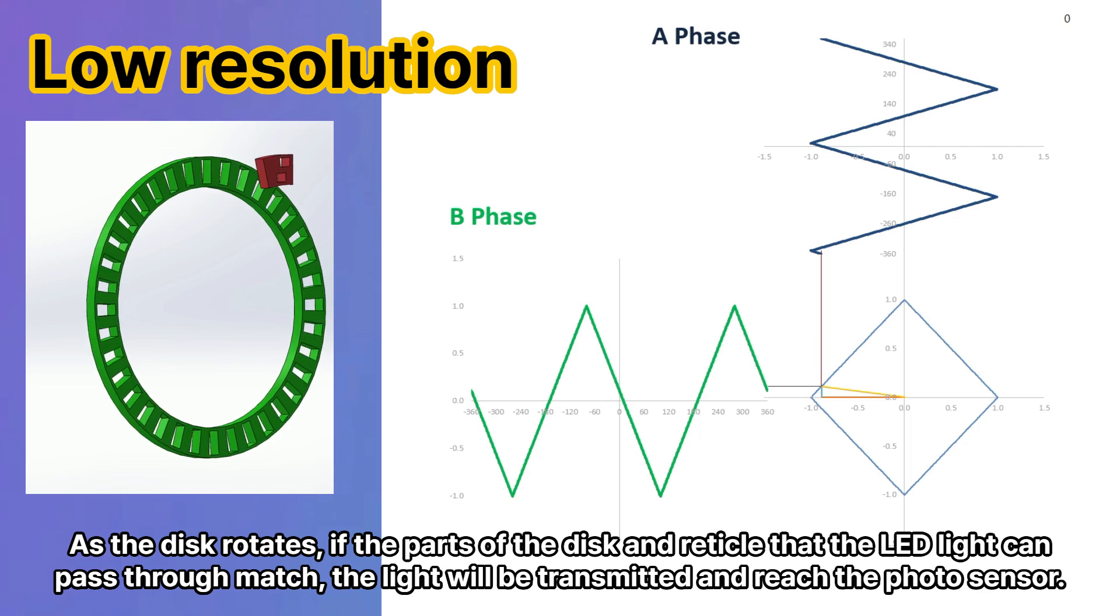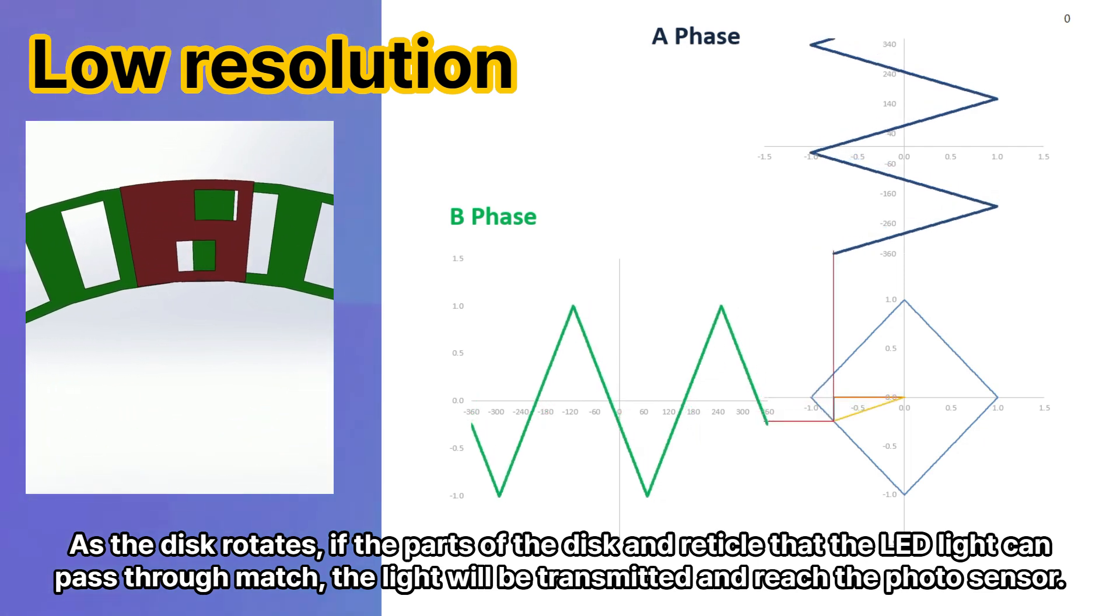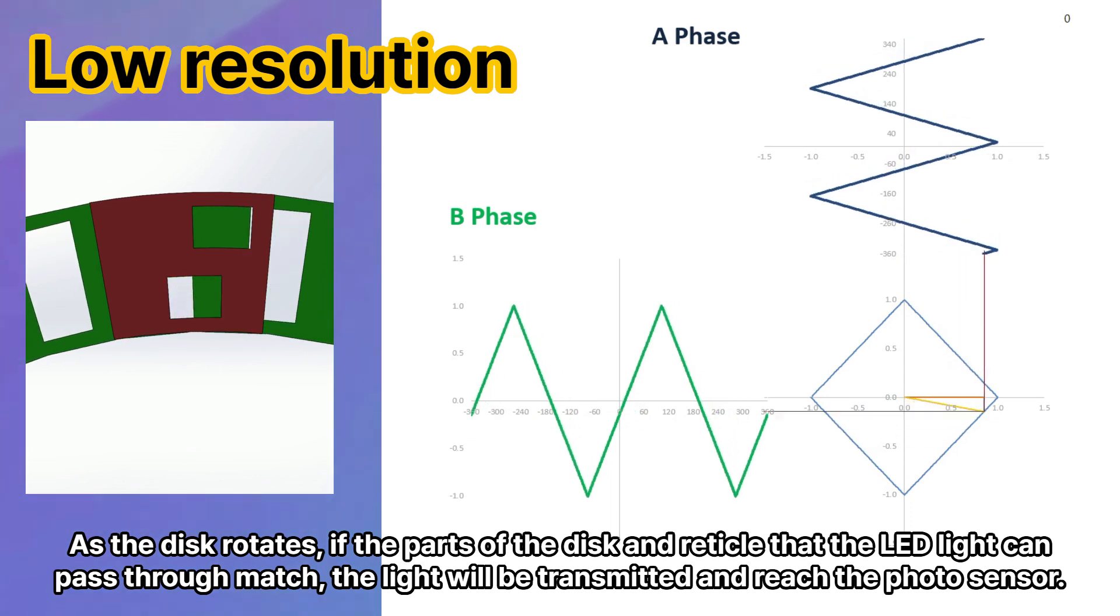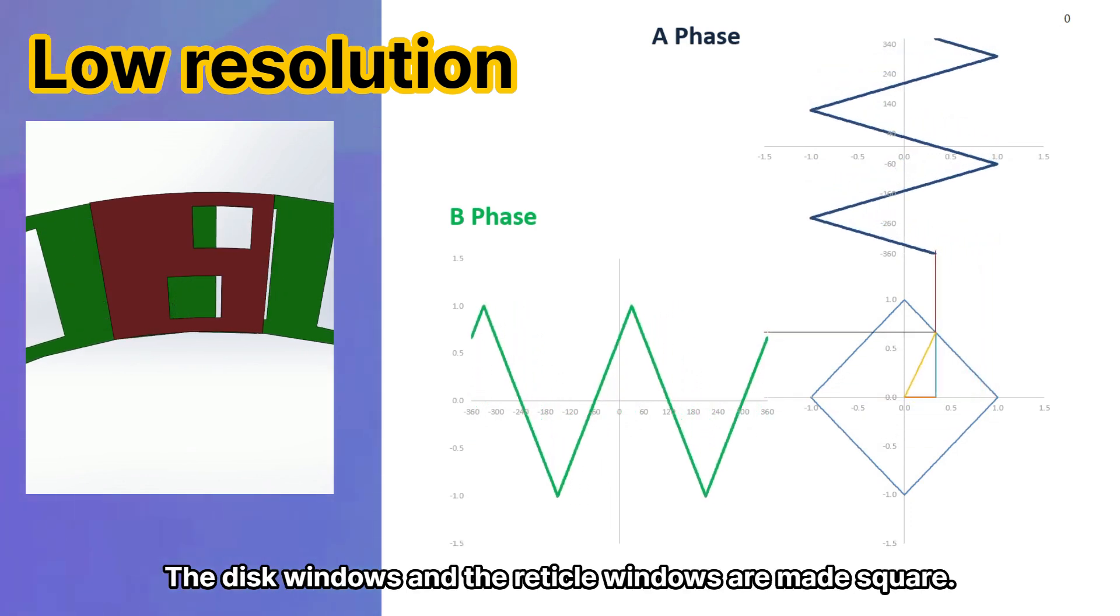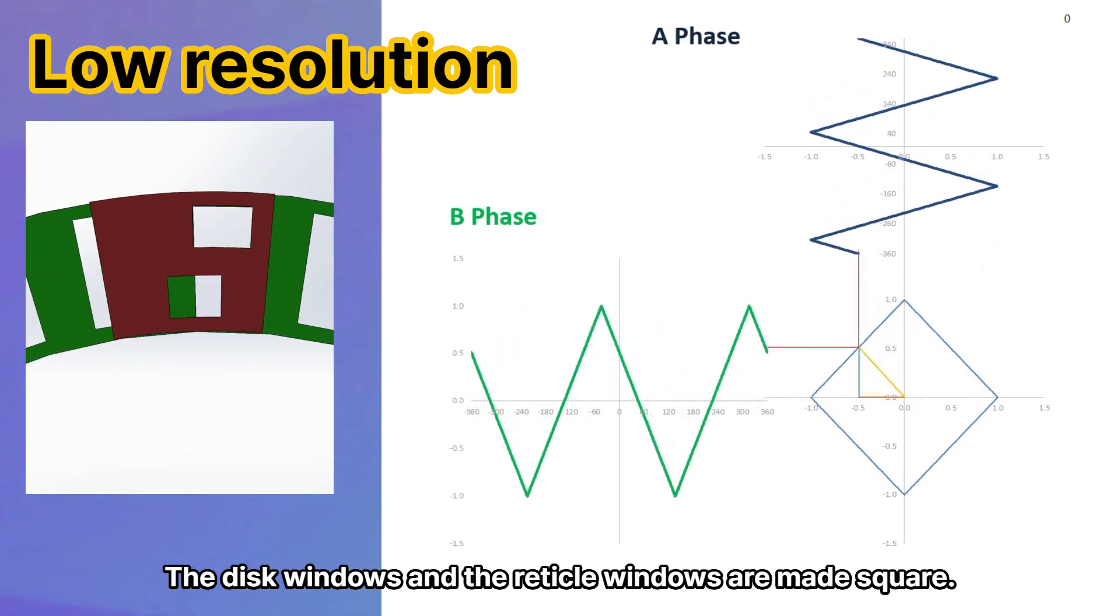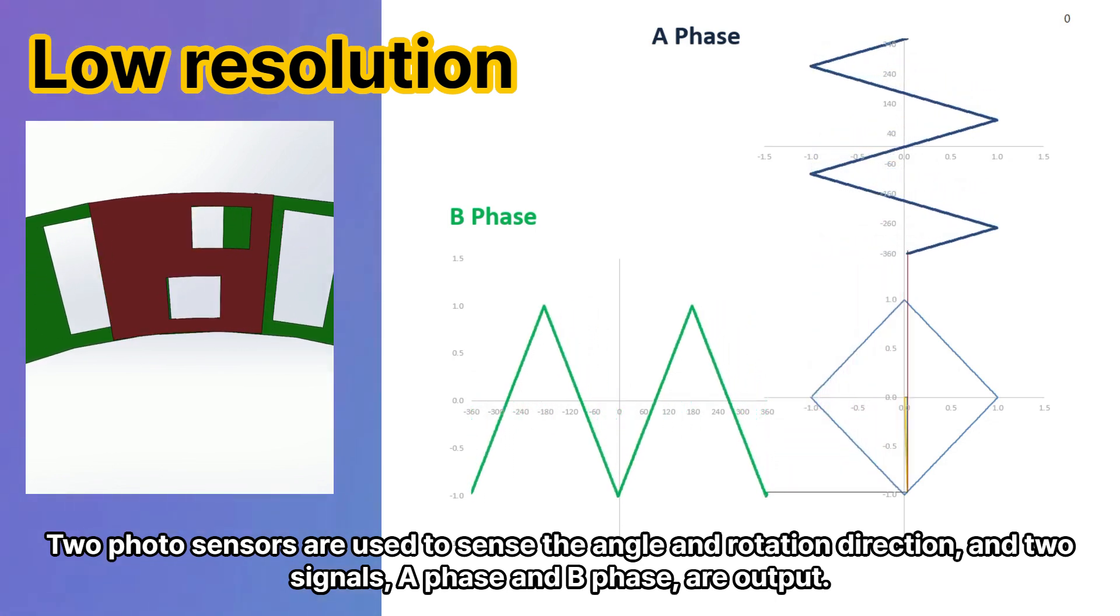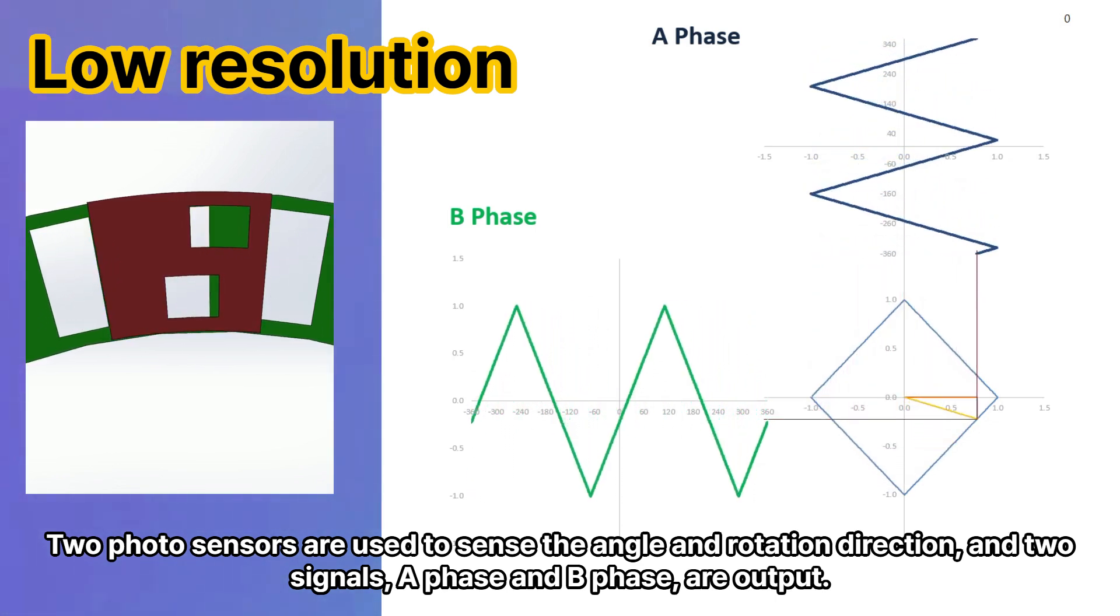As the disk rotates, if the parts of the disk and reticle that the LED light can pass through match, the light will be transmitted and reach the photosensor. The disk windows and the reticle windows are made square. Two photosensors are used to sense the angle and rotation direction, and two signals, A phase and B phase, are output.